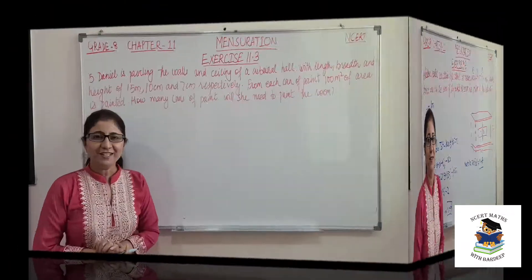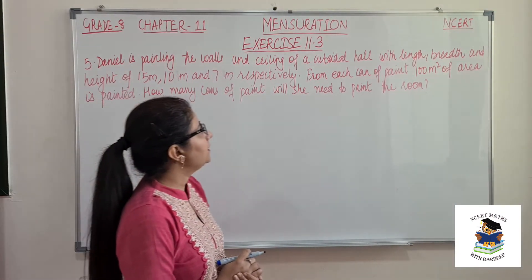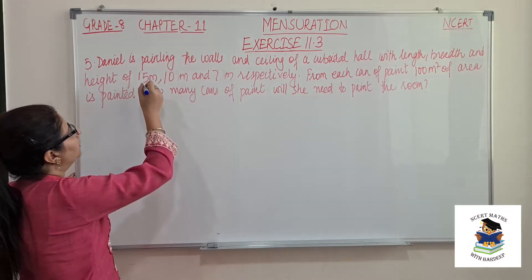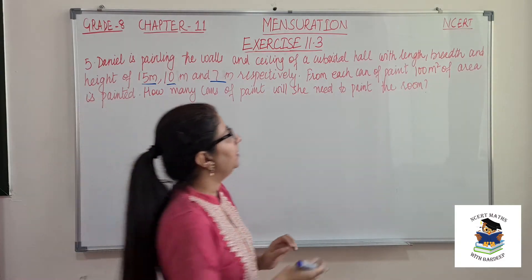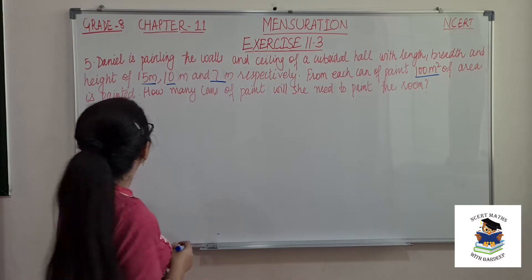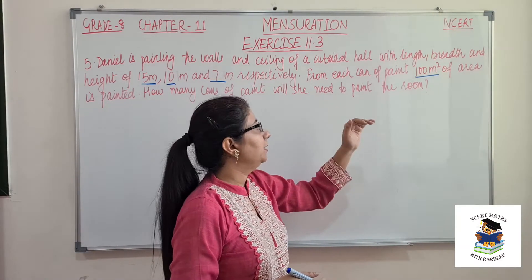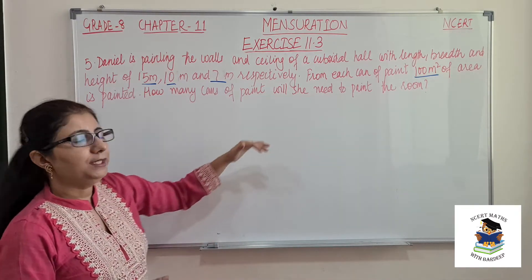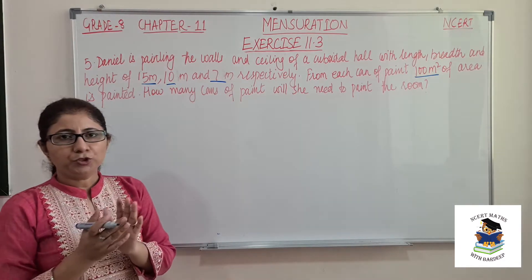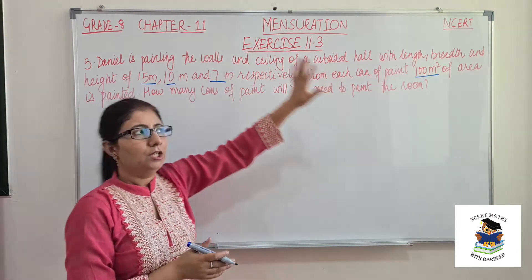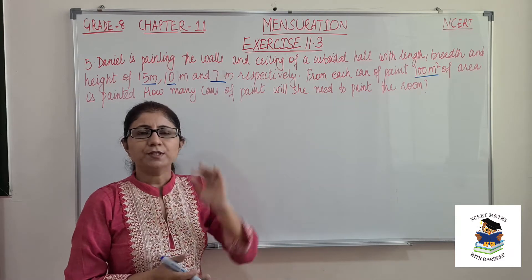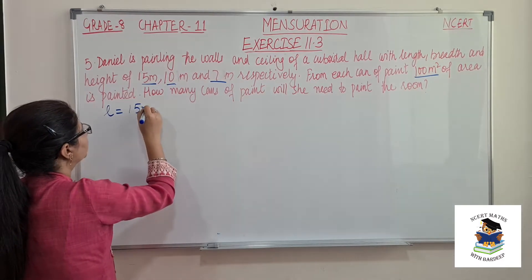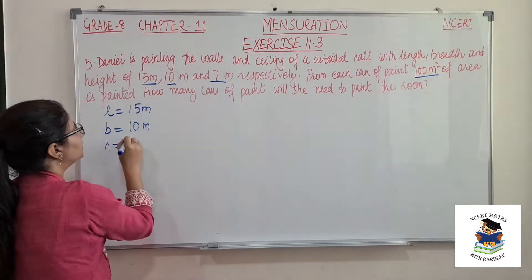Now let's see our fifth question. Denier is painting the walls and ceiling of a cuboidal hall with length, breadth and height of 15 meter, 10 meter and 7 meter respectively. From each can of paint, 100 meter square of area can be painted. How many cans of paint will she need to paint the room? First we find the total area she will paint, then determine the number of cans required.